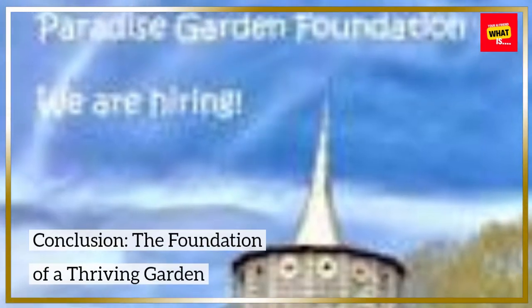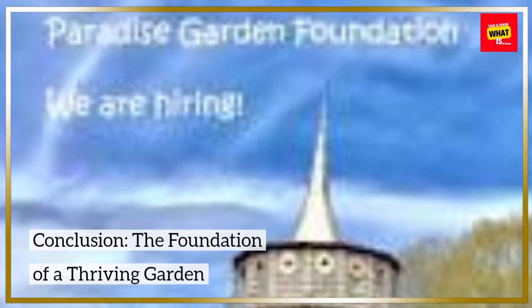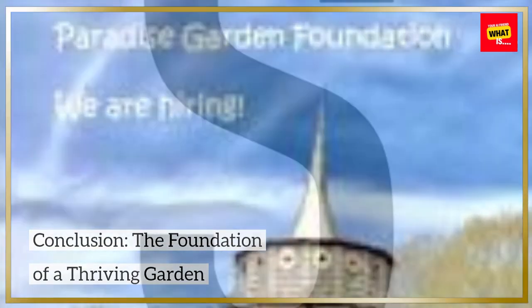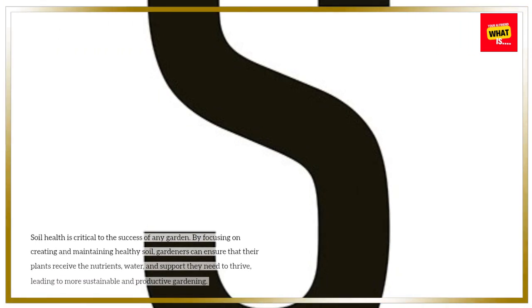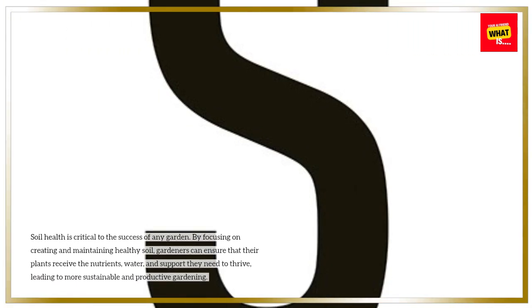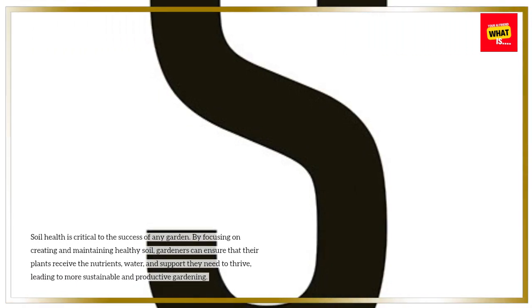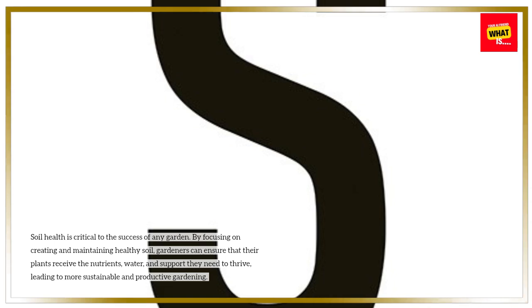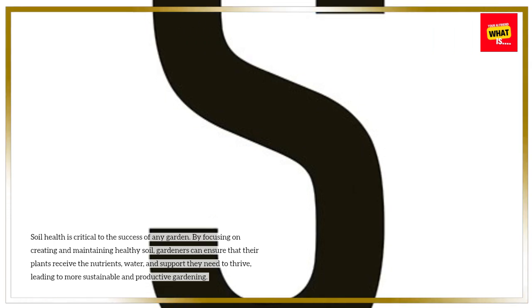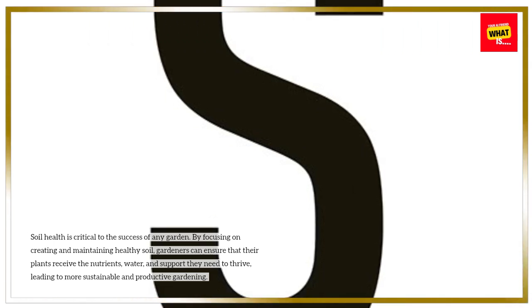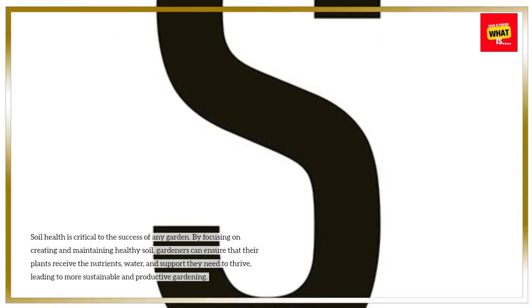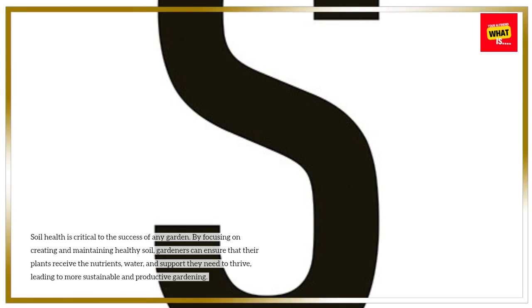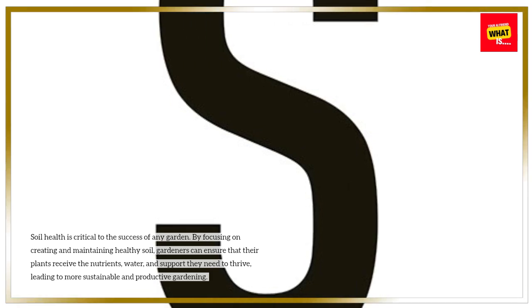Conclusion: The Foundation of a Thriving Garden. Soil health is critical to the success of any garden. By focusing on creating and maintaining healthy soil, gardeners can ensure that their plants receive the nutrients, water, and support they need to thrive, leading to more sustainable and productive gardening.